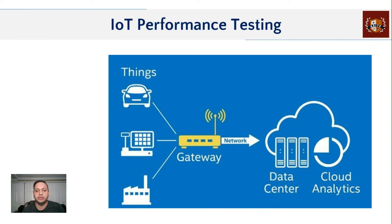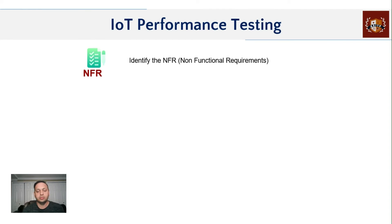Now that we know these three layers, if you put on your performance testing hat, you'd think about the best points to test them. First, you must identify non-functional requirements really well, because there are many external factors compared to traditional testing. You need to sit with the business team and understand exactly how these devices are expected to perform. Scaling is also one area where you have to be careful and capture the right information.